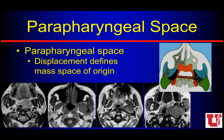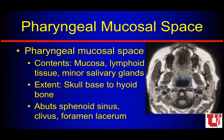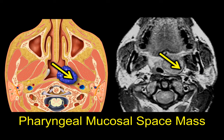First of the spaces around the parapharyngeal fat is the pharyngeal mucosal surface or space, outlined here in blue. That's part of the upper air digestive tract — we've got the mucosa, lymphoid tissue, and some minor salivary glands. This is really where squamous cell carcinomas live. It goes from the skull base all the way down along the upper air digestive tract. Here on the axial T1, I've outlined the pharyngeal mucosal surface or space — you can see it is medial to that fat. A generic lesion here pushes the parapharyngeal fat posteriorly and laterally.